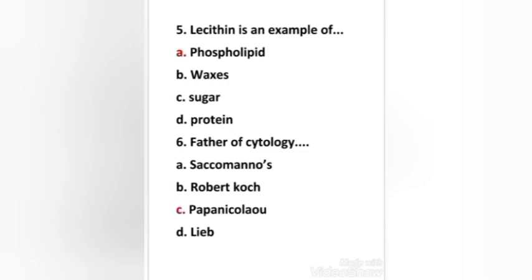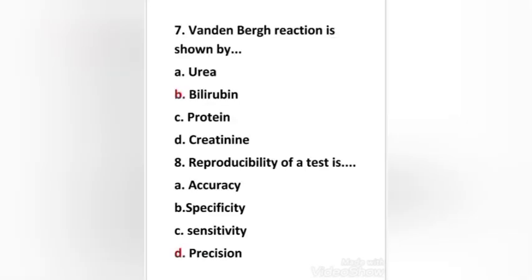Next question: the van den Bergh reaction is shown by — urea, bilirubin, protein, or creatinine? The right answer is option B — the van den Bergh reaction is shown by bilirubin.